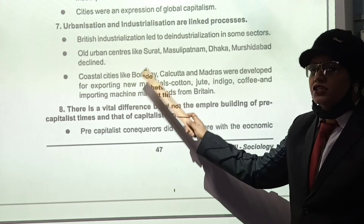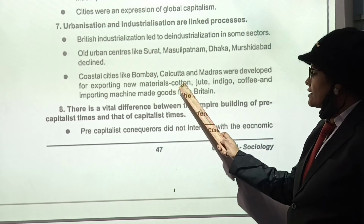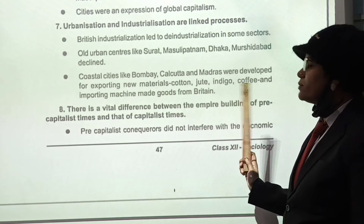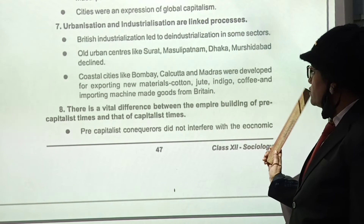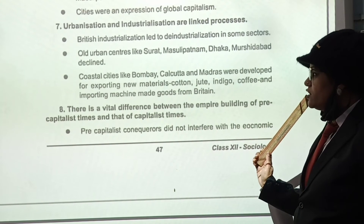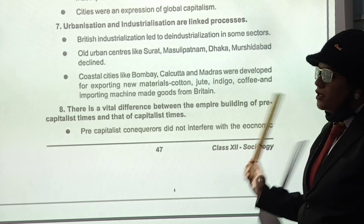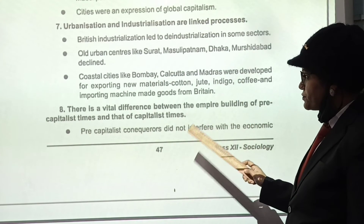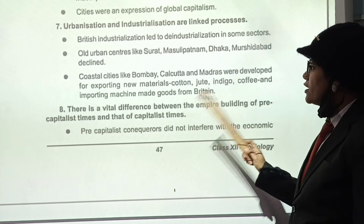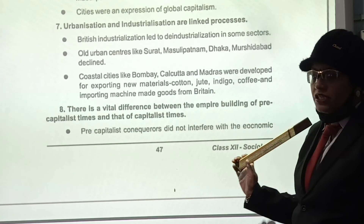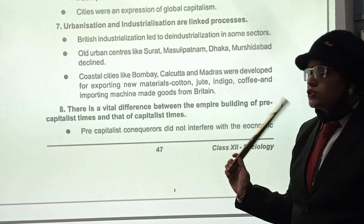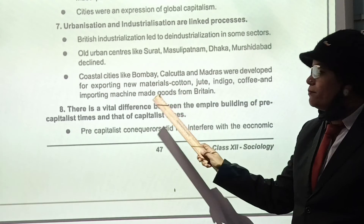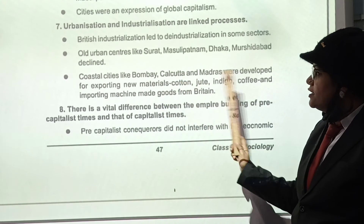The British developed coastal cities like Bombay, Calcutta, and Madras for exporting raw materials such as cotton, jute, indigo, and coffee, and for importing machinery from Britain. Because coastal areas made it easy to load and unload material, it was British policy to develop these coastal cities.